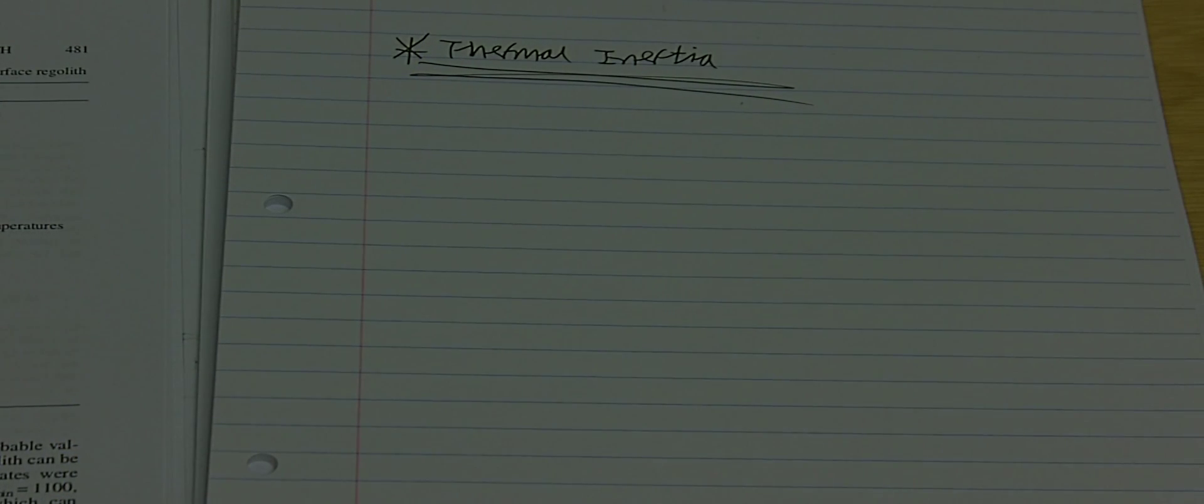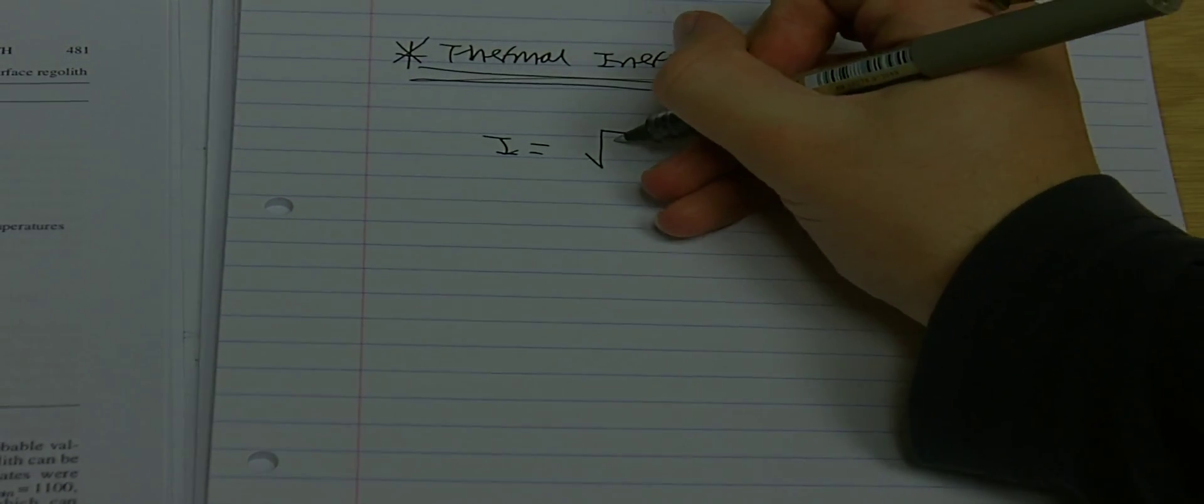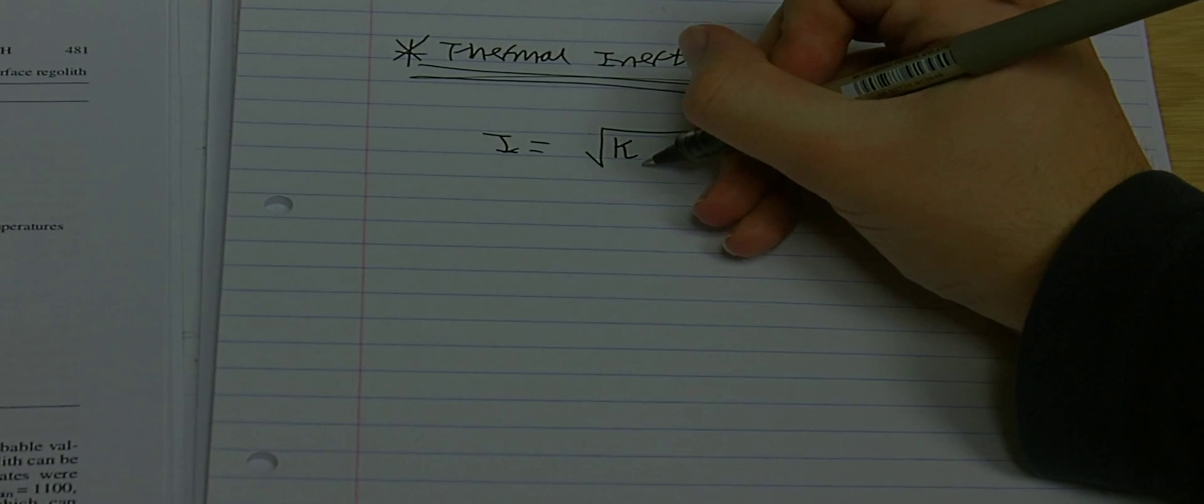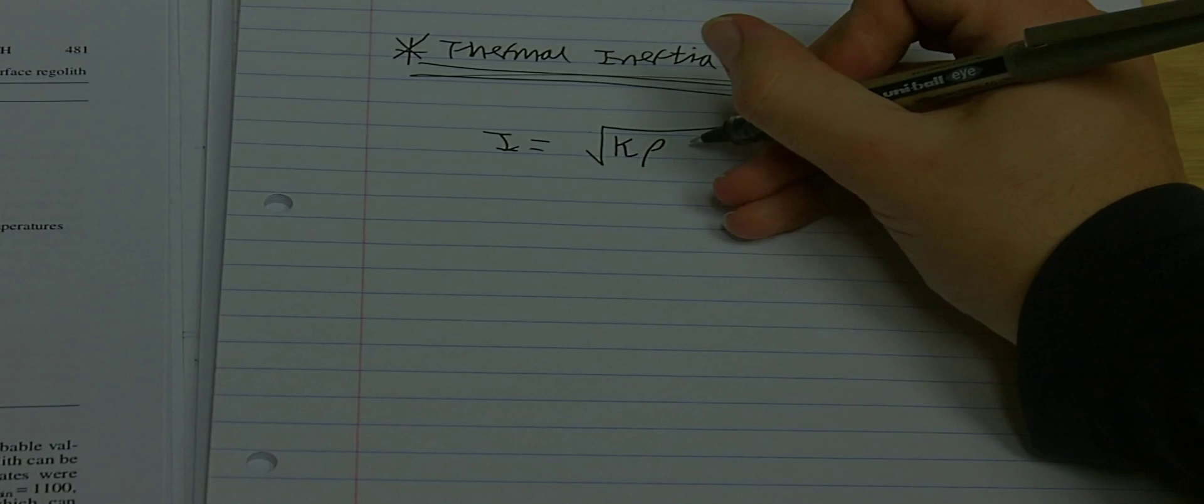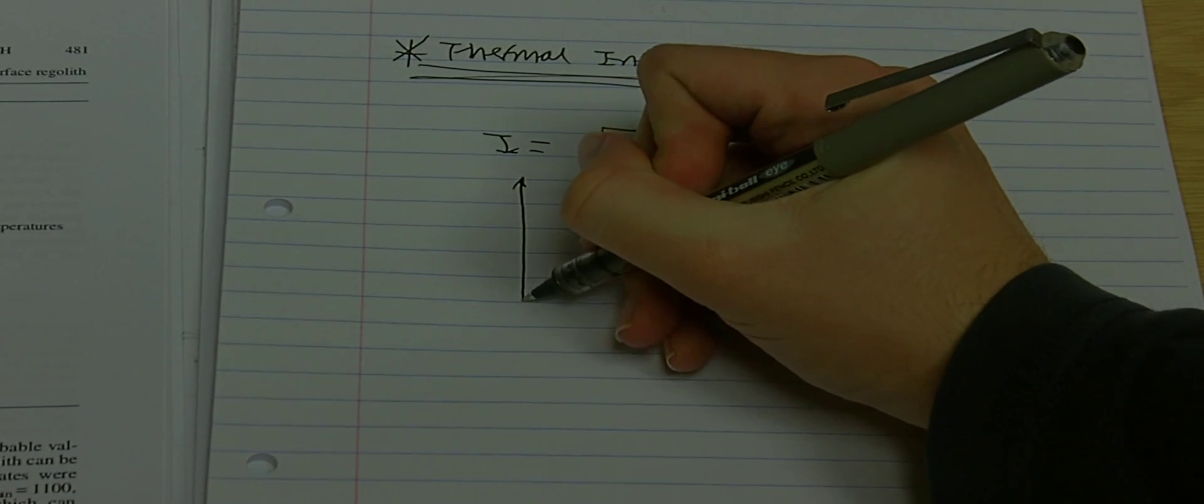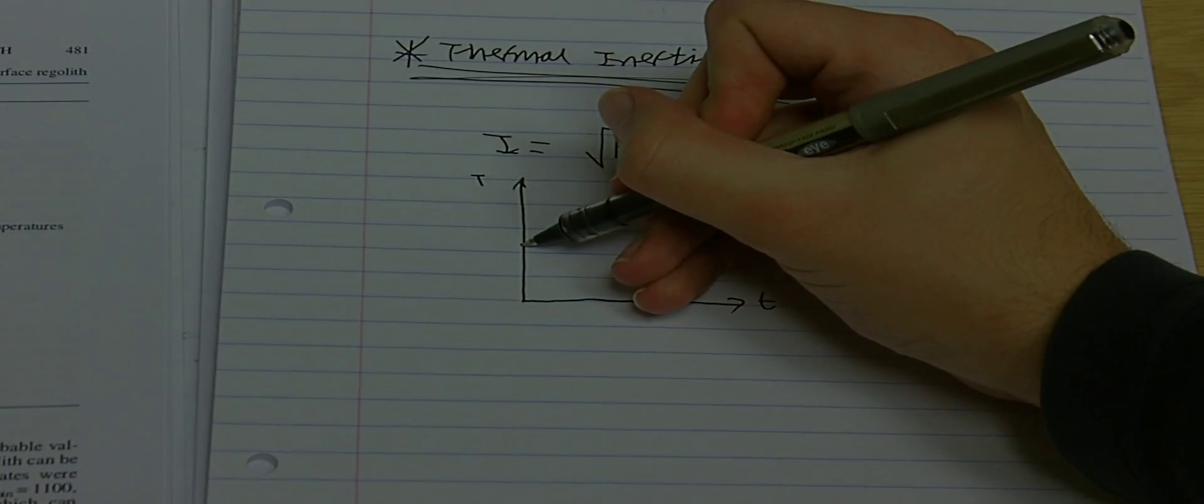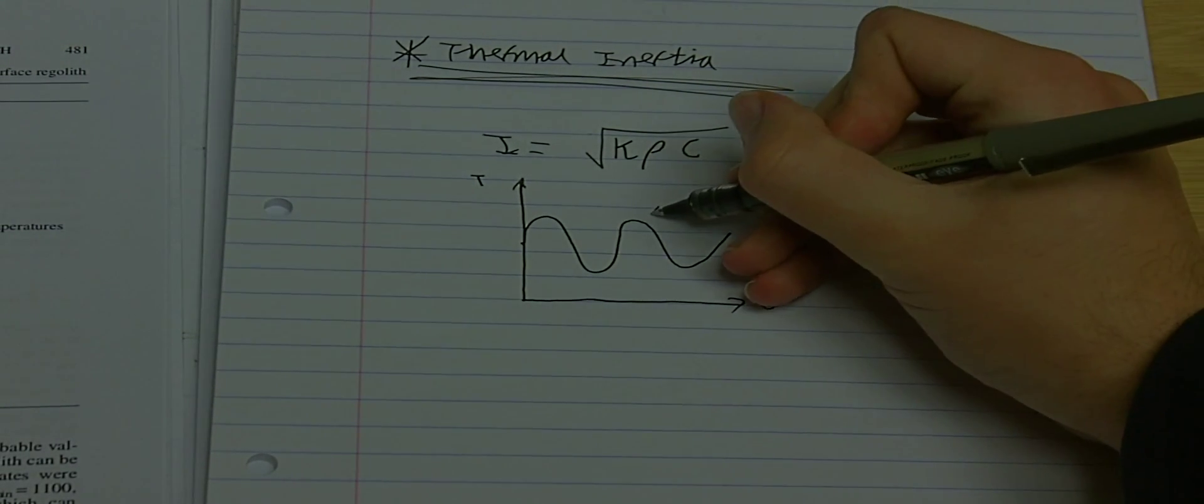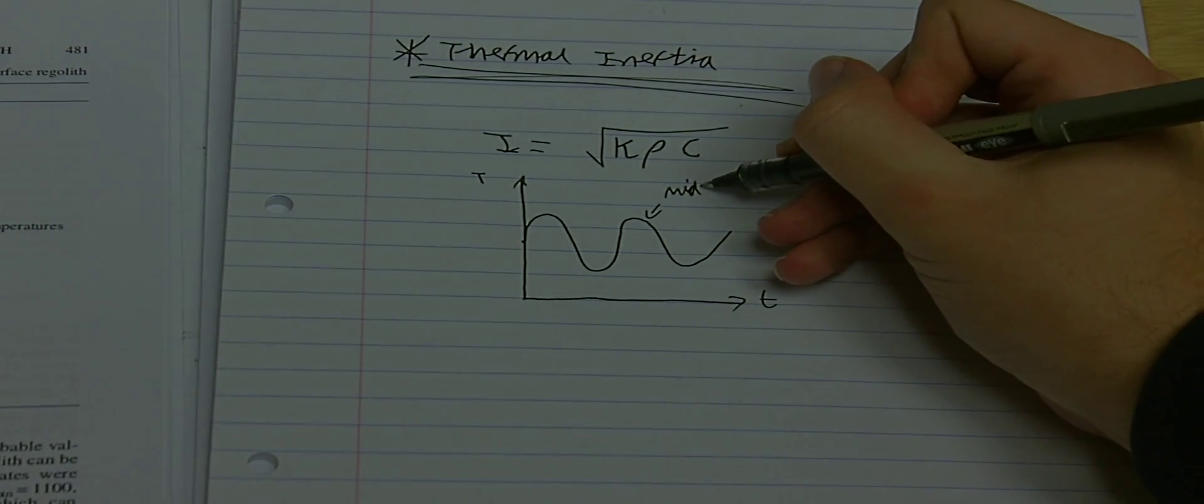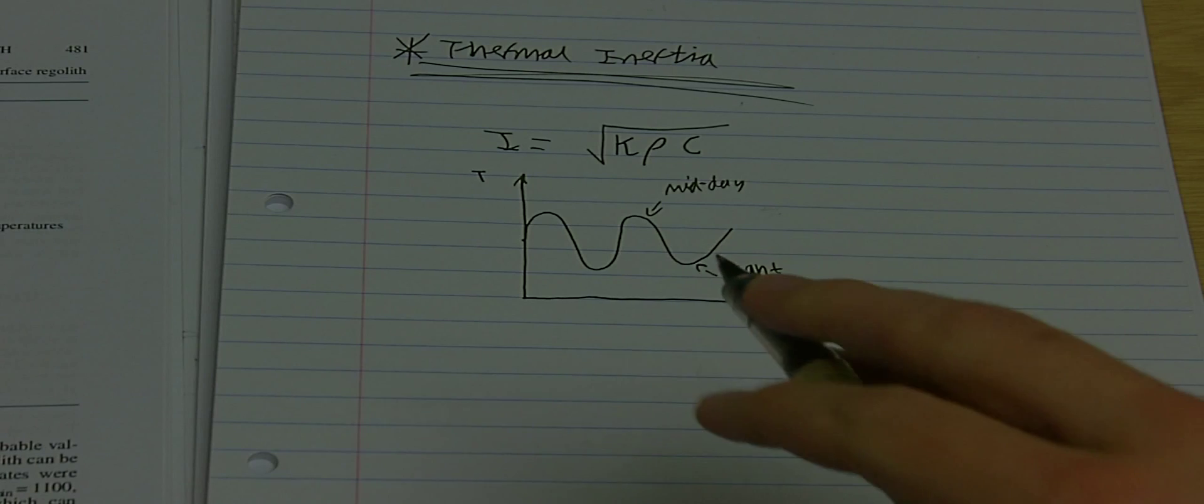The most important parameter to determine the thermal environment is something called the thermal inertia, given the letter I, defined as the square root of the thermal conductivity denoted by kappa times the density of the material given the symbol rho times the specific heat capacity given the symbol c. The reason why this quantity is important is because whether it's small or large determines the temperature variations we see at the surface. If the thermal inertia is really low, then as a function of time the temperature will look something like this, where this is midday. So basically this is the day and this is the night. The temperature varies a lot.